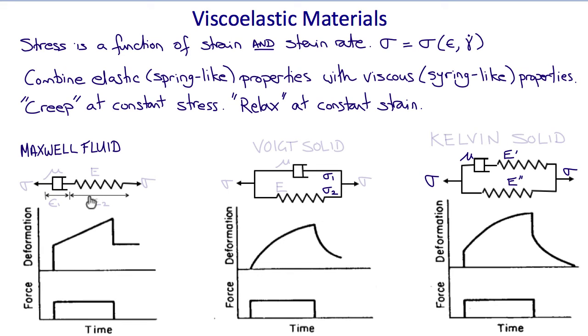We can construct various different viscoelastic models by combining solid-like and fluid-like behaviors in different combinations. For example, if we put a solid elastic material and a viscous fluid in series with each other, we get a Maxwell fluid. If we put them in parallel, we get a Voigt solid, and if we have two solid-like materials, or if you like, a Maxwell fluid in parallel with a spring, we get what's called a Kelvin solid or standard linear solid. So you can think of each of the syringes as representing a fluid with viscosity mu, and each spring is representing an elastic solid with Young's modulus E. So depending on the way that these properties combine, we get different behaviors.